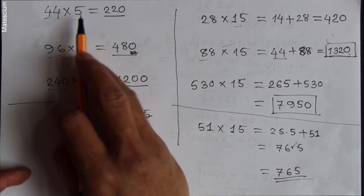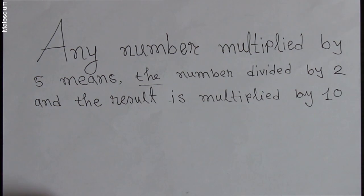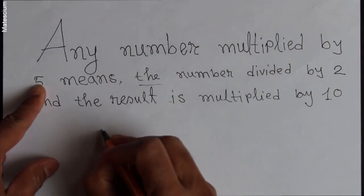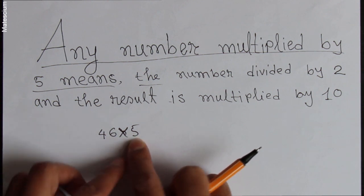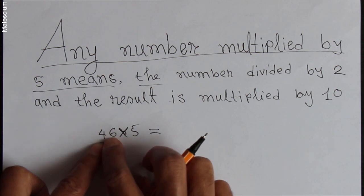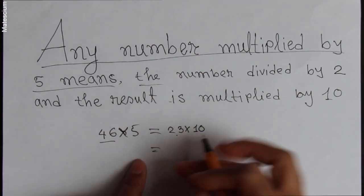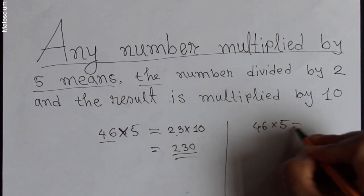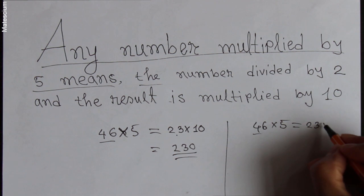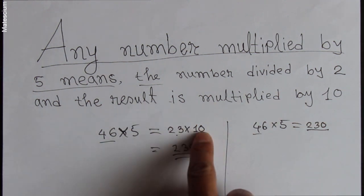Now let me show you what exactly happens when you multiply any number by 5 and why you write an additional 0. The secret lies in this: any number multiplied by 5 — let's say 46 times 5 — equals the number divided by 2, then multiplied by 10. So 46 divided by 2 is 23, and 23 times 10 is 230. That's what I did simply: half of 46 is 23, then write an additional 0. The secret is: halve the number, then multiply by 10.